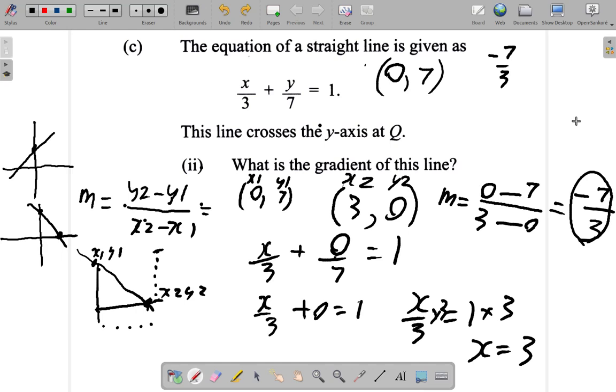So those are two possible ways that you could get the gradient of the line. Now you could see it from a graph as well. After finding out that two points on the line are (0, 7) and (3, 0), what you could do, let me just get rid of some of these things.